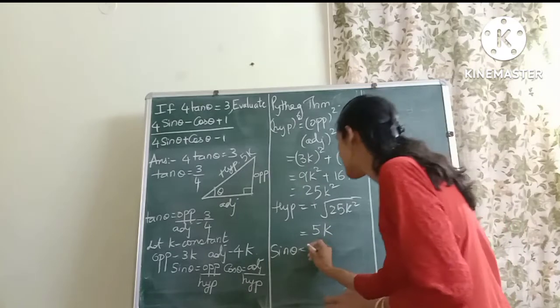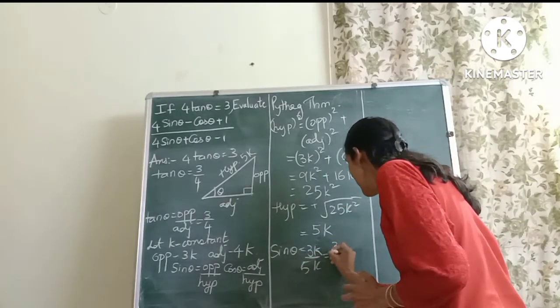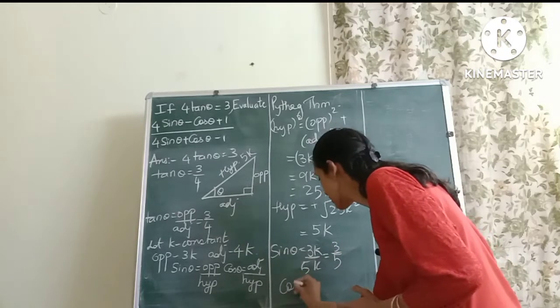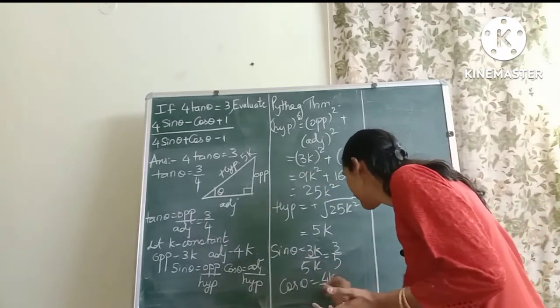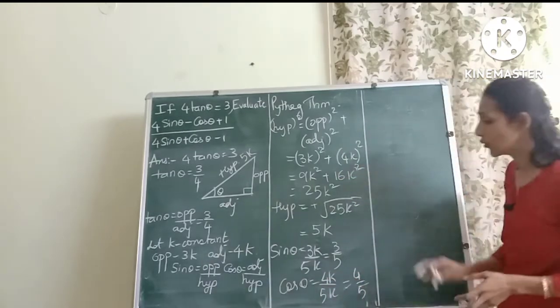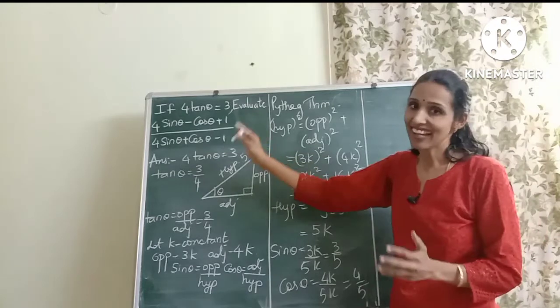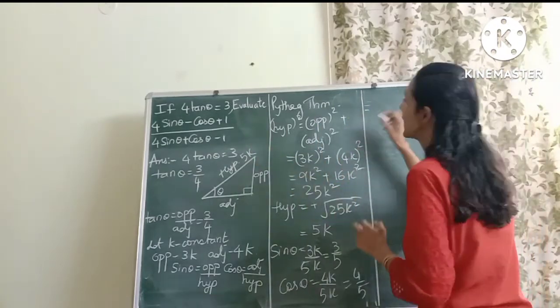So what will be sin θ? Yes, can you tell me? It will be the opposite side, 3k, divided by 5k, which is 3 by 5. Also, what is cos θ? It will be adjacent, which is 4k, divided by 5k. It will be 4 by 5. So I finally know what is sin θ and cos θ.